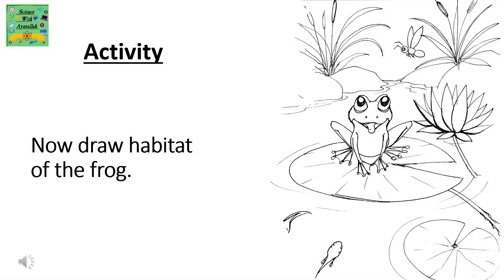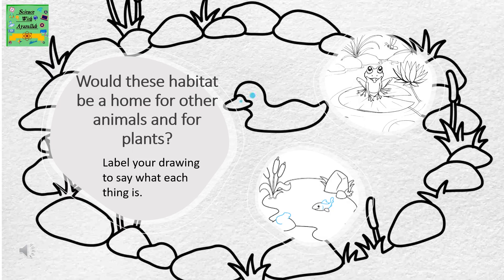Now there is an activity. Draw the habitat of the frog. Would these habitats be a home for other plants and animals? Label your drawing to say what each thing means.